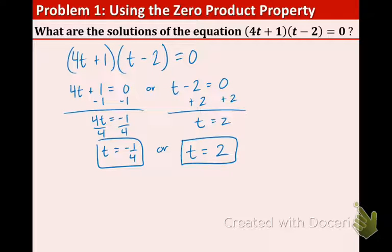So the solutions of this equation are t equals negative one fourth and t equals two. So that means if you were to plug in either of those numbers for the original equation, you would get an answer of zero. And I encourage you to check your answers when you are doing classwork or problems on a quiz or a test.